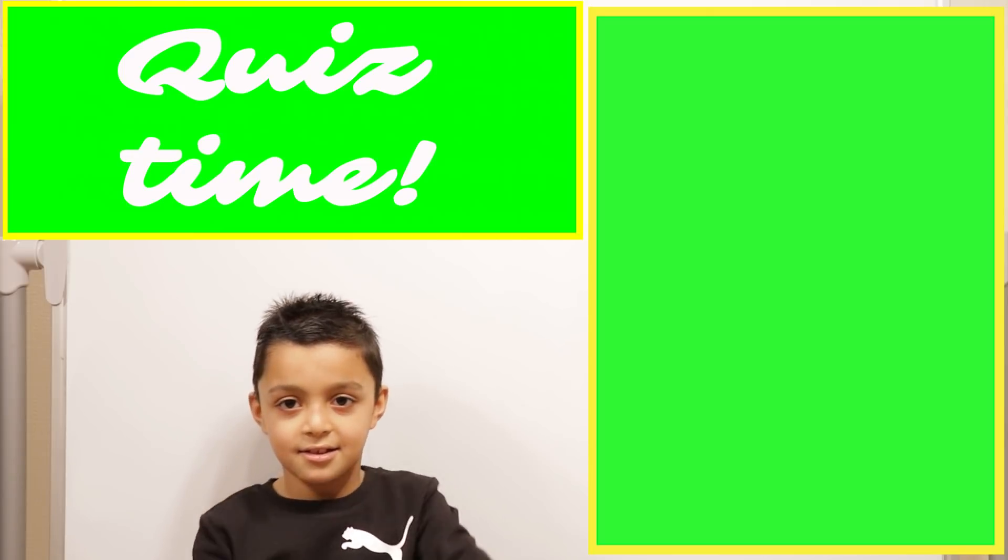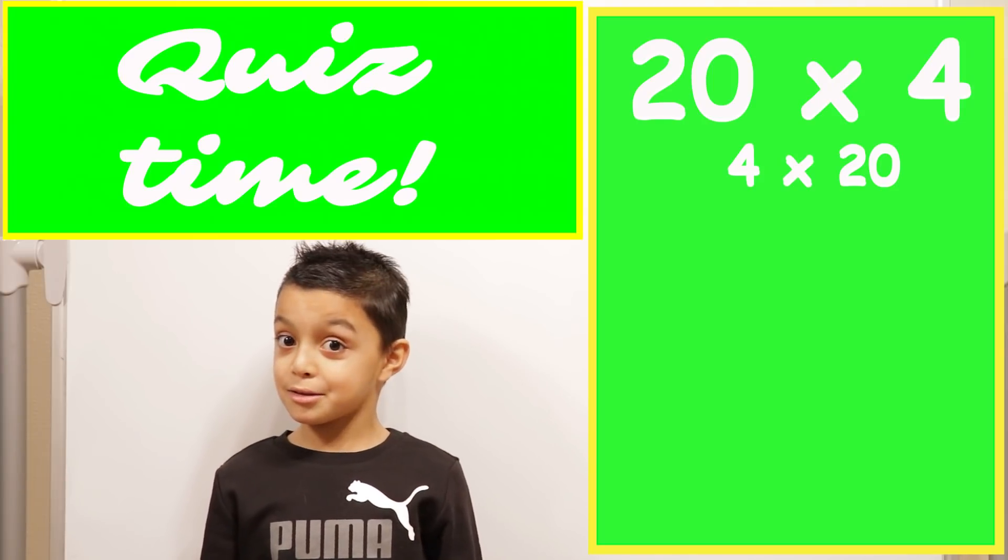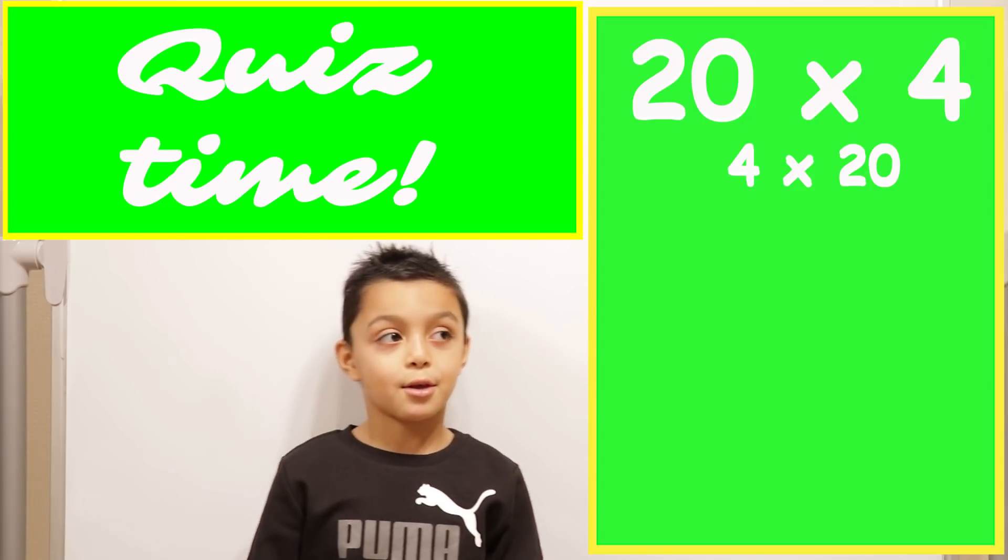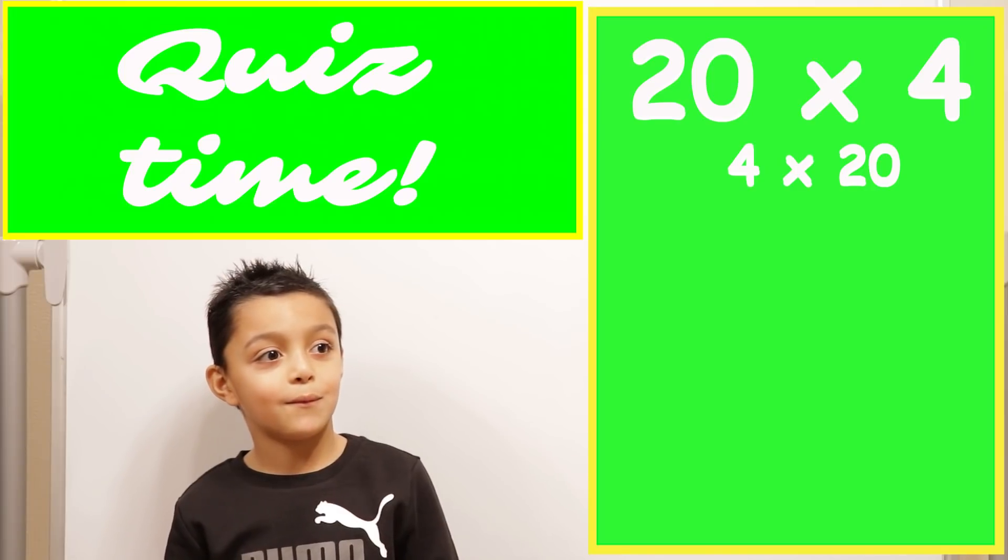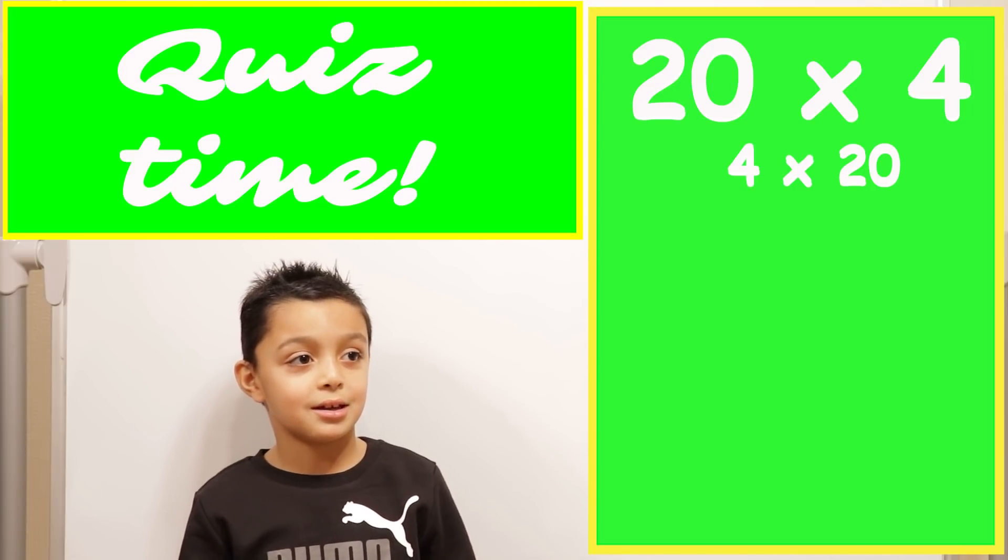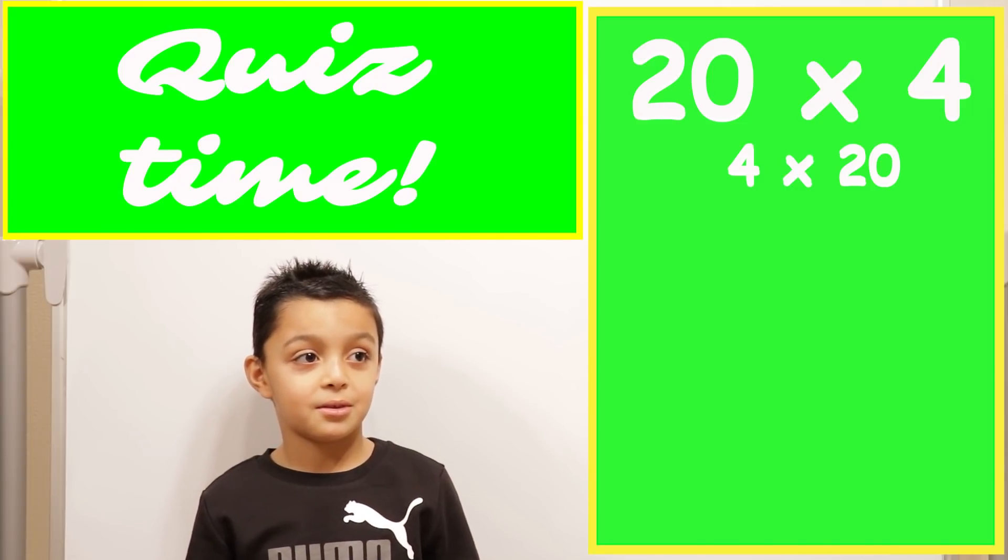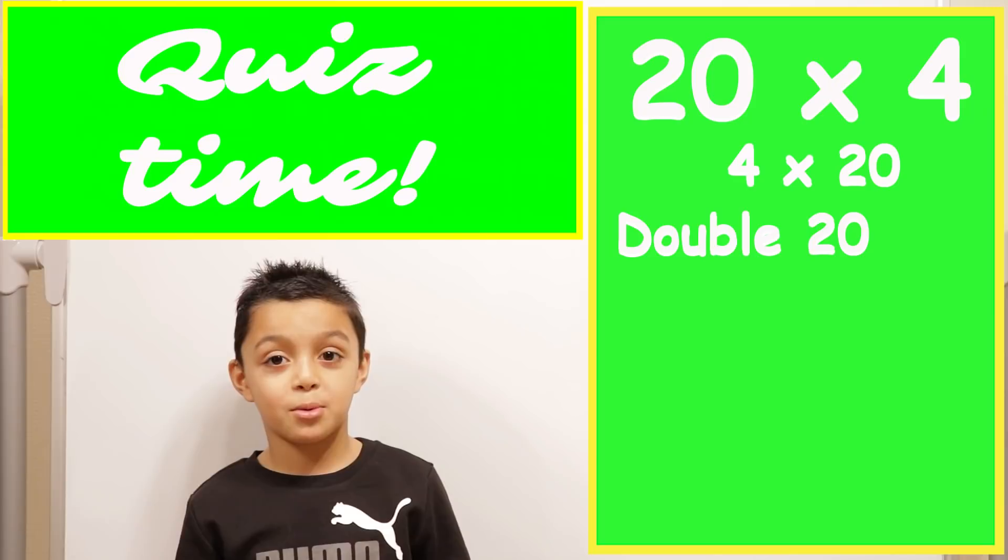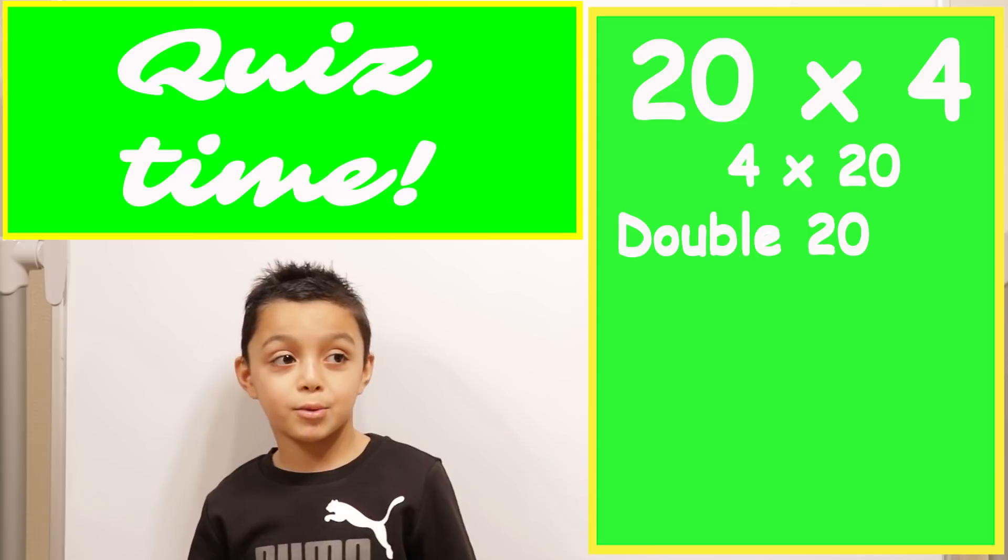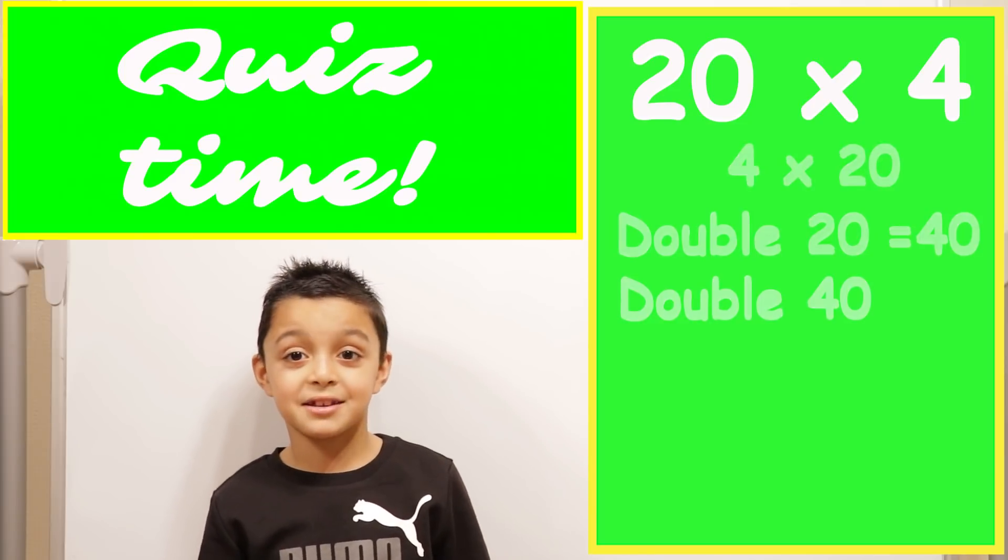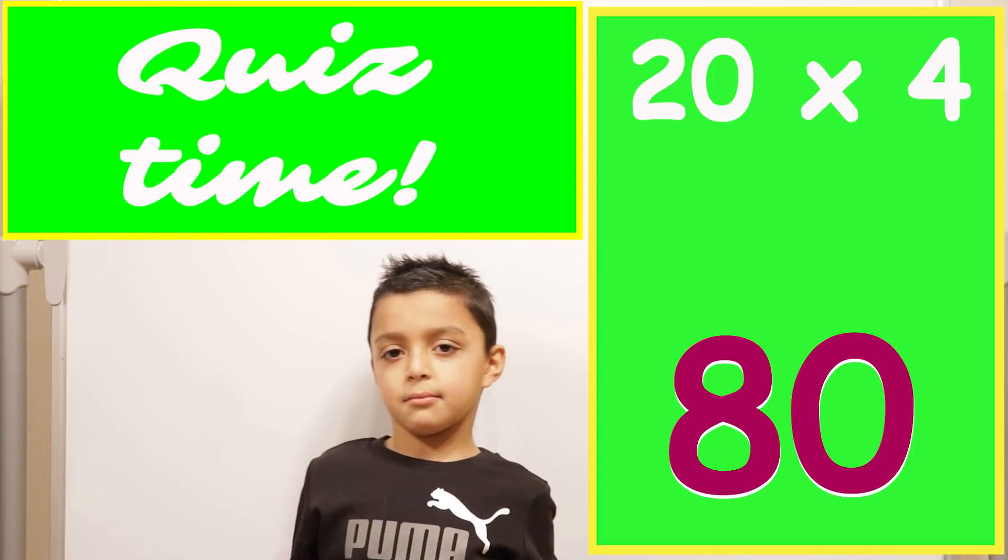What is twenty times four? Four times twenty. Okay. So I'll do four times twenty. Four times twenty is... What's the method? The doubling method? Oh yeah, double twenty and then double it again. Okay, so? So I'll double twenty which is forty and double forty is eighty. So the answer is eighty. Okay, very good.